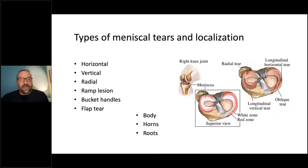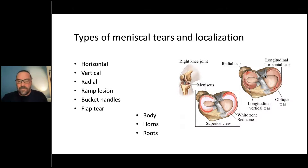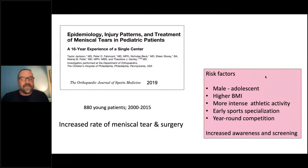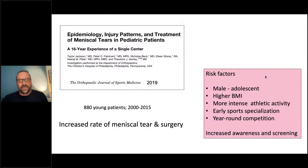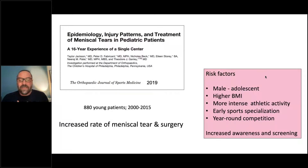Types of meniscal tears include mainly horizontal, vertical, and radial, as well as ramp lesions, bucket handles, and flap tears. Localization is also important — body, anterior or posterior horns, or roots. The red or white zone matters greatly for healing due to vascularization. A recent study of 2019 covering almost 900 young patients from 2000 to 2015 showed an increased rate of meniscal tear and surgery. Risk factors identified include male sex, adolescent age, higher BMI, more intense athletic activity, early sports specialization, year-round competition, and increased awareness and screening by medical teams.